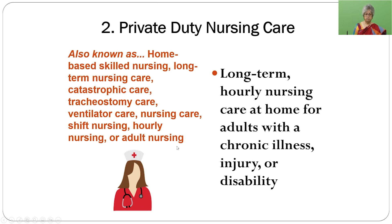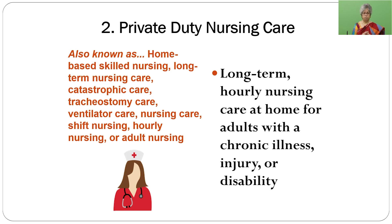The second variety is private duty nursing care. This is often seen in post-surgical patients sent home after surgery who need nursing care for a few weeks to a few months. Such nurses are appointed and this care is a little more long-term. Hourly nursing care at home for adults with chronic illness, injury, or disability is also done.